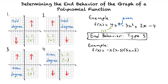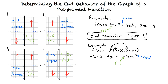What is the end behavior of f of x equals negative x times x minus 3 times 5x plus 2? For this one, it appears I'll have to expand it first. Remember, you only need the degree and the sign of the leading coefficient, so you don't have to expand everything — you only need the leading term of the polynomial. So I'll find the leading term by multiplying the negative x with the first term of each factor: negative x times x times 5x equals negative 5x cubed. The degree is odd and the leading coefficient is negative, so the graph rises to the left and falls to the right.